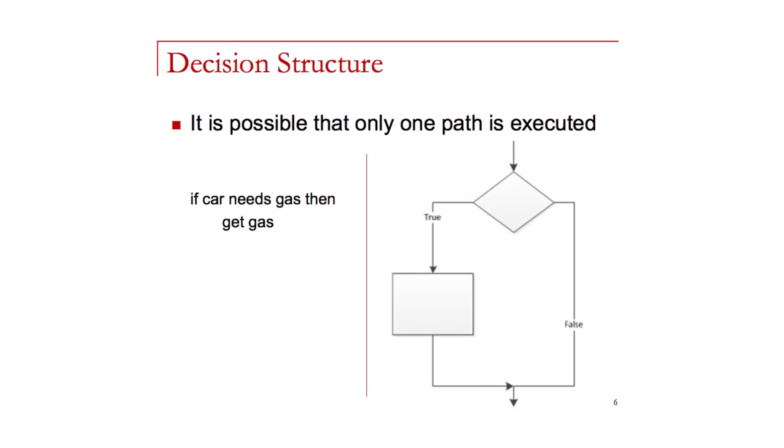It may be possible that there's a situation where only one path is executed. In this case, it should be just an if statement. So if my car needs gas, then I get gas. There's no expression here of what happens otherwise. I just only get the gas when the need arises.